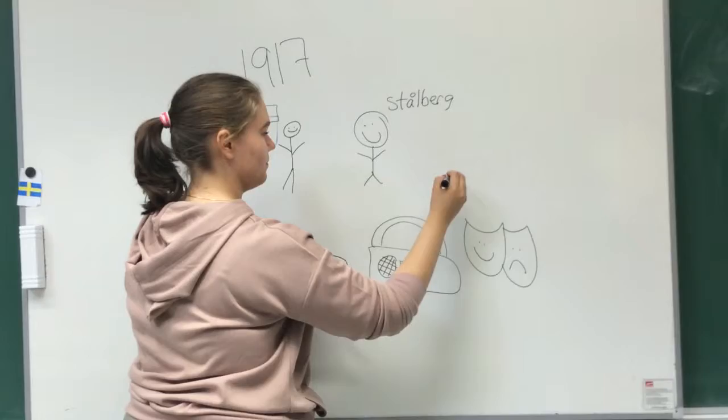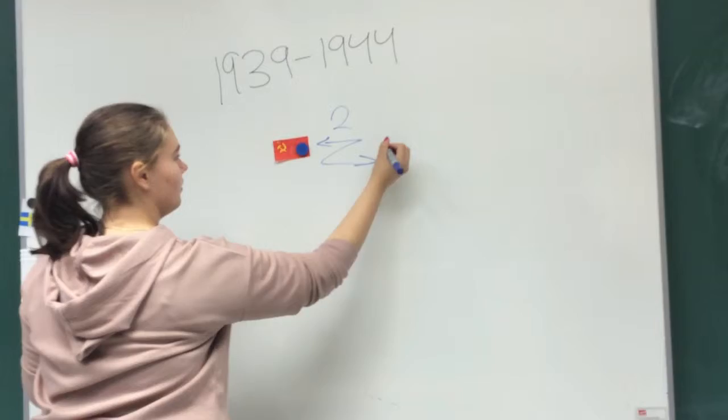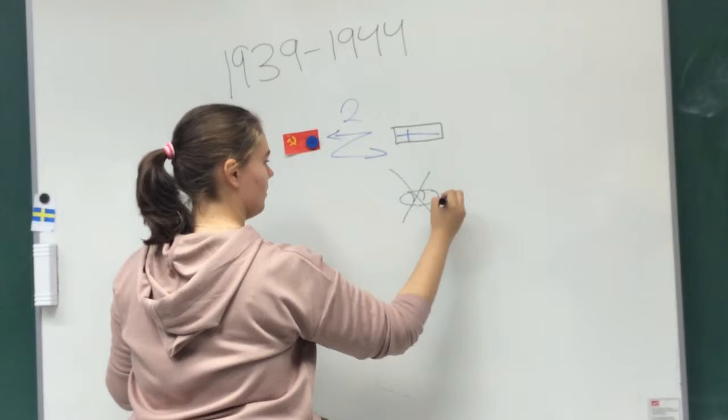From 1939 to 1944 there were two wars between Finland and the Soviet Union. There wasn't much food and supplies were low. 1944 the peace was made and Finland stayed independent.